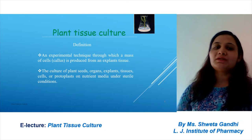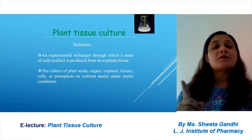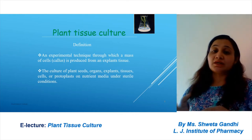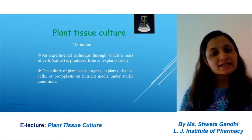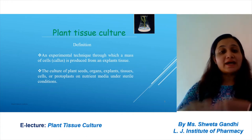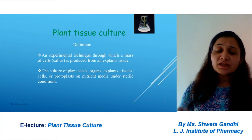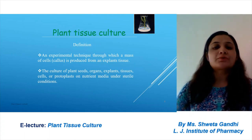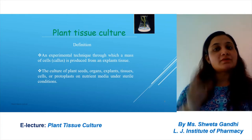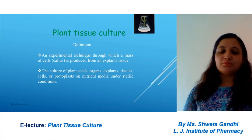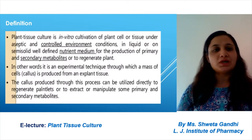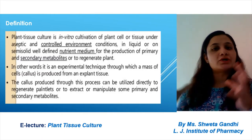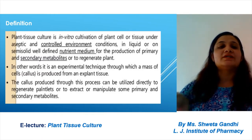So we have to form the definition: it is an experimental technique — experimental because we are doing this in the lab artificially. An experimental technique where the mass of cells is produced from the explant. The explant may be a leaf, organ, stem, or root. The culture of plant seeds, organs, explants, or protoplasts on a nutrient medium under sterile conditions — sterile condition is the most important for plant tissue culture.